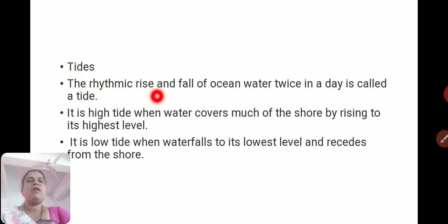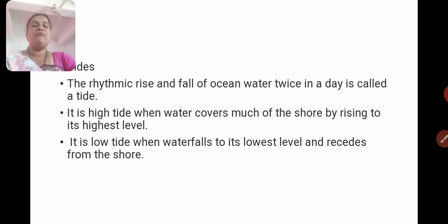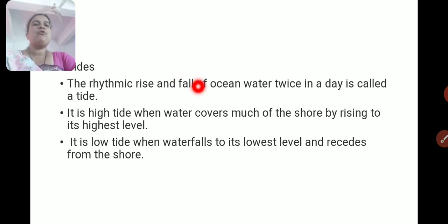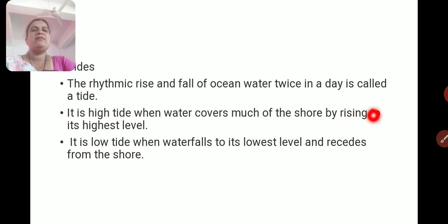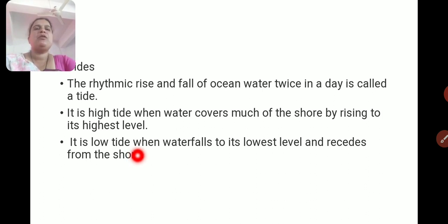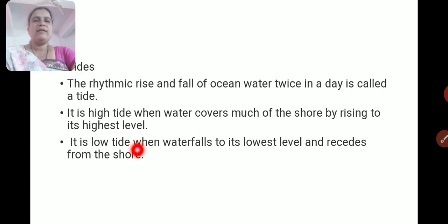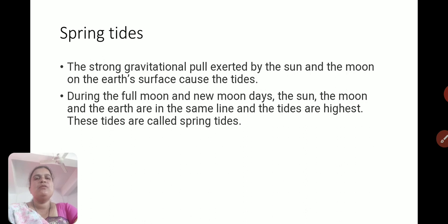Now, tides. The rhythmic rise and fall of ocean water twice in a day is called a tide. The difference between waves and tides is that waves continuously occur on the surface of the ocean. But tides — the rhythmic rise and fall of ocean water twice in a day — it is high tide when water covers much of the shore, rising to its highest level. And it is low tide when water falls to its lowest level and retreats from the shore. So, high tide and low tide.